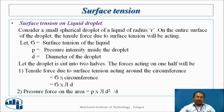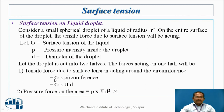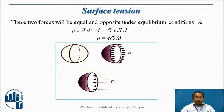Consider a small spherical droplet of liquid of radius R. The tensile force due to surface tension is acting, where sigma is surface tension, P is the pressure intensity, and D is the diameter. Let the droplet be cut into two halves. The tensile force is sigma into circumference, that is, sigma × π D. The pressure force is P × π D² / 4. Equating these two for equilibrium: P × π D² / 4 = sigma × π D, giving P = 4σ / D. That is the first derivation.